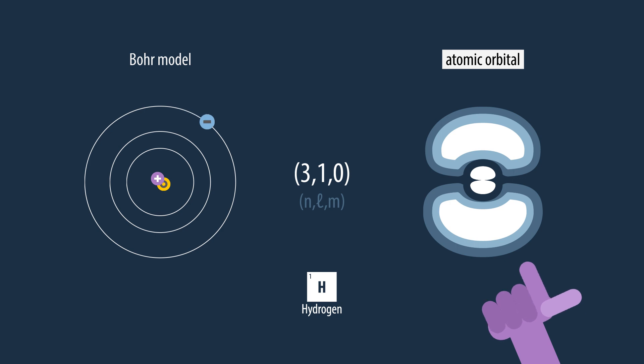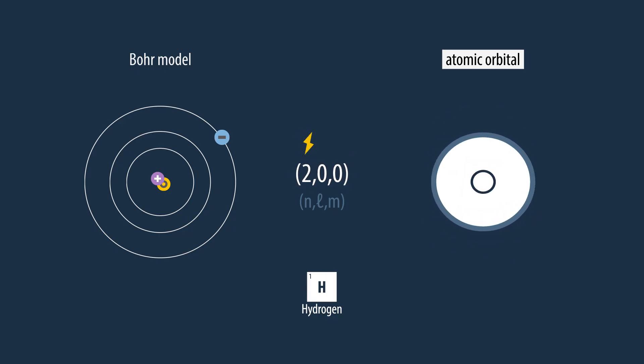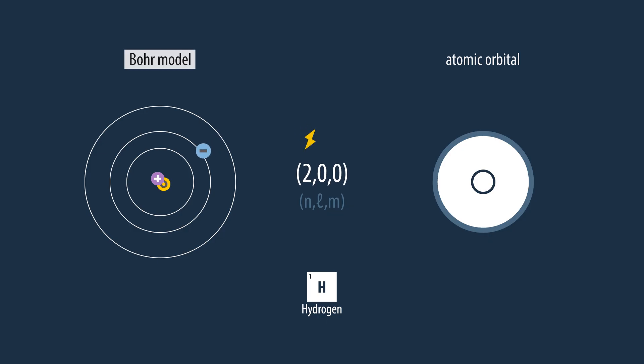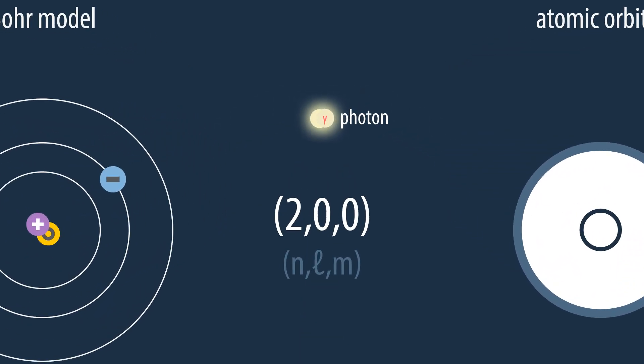Now, when we change the atom's properties, for instance we make it lose energy, it will change into a different orbital. In the Bohr model, this is represented by the electron switching to a lower orbit. Also, when losing energy, the atom will emit a photon, or simply put, light.